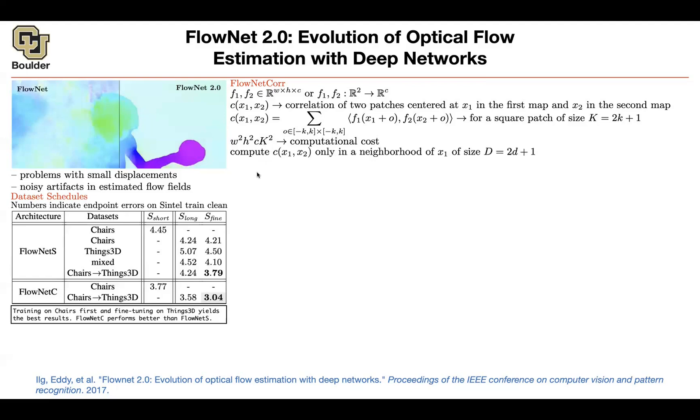So this paper is saying don't compute it for every single pair of pixels from the first feature map and the second feature map. Just do it in a neighborhood of x2s around x1. Don't do it for every single pixel of f2. And then you can reduce the cost. It's going to be w h d squared is that neighborhood which could be a hyperparameter under your control. So you can control the computational cost.